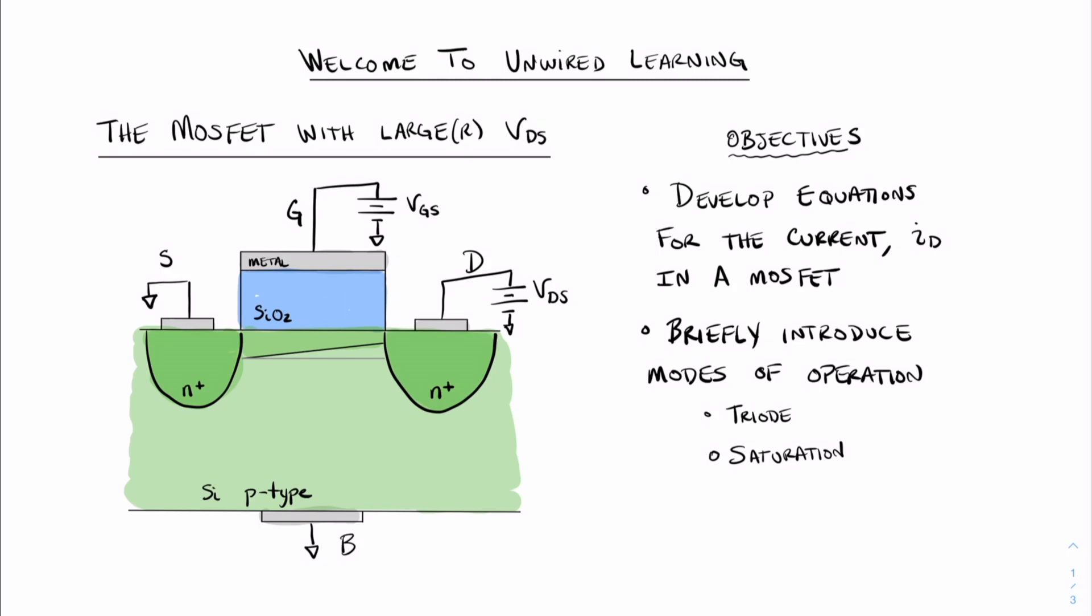Welcome to Unwired Learning. In this video, we're going to talk about the MOSFET with a larger value of drain-to-source voltage. In particular, we're going to talk about the development of equations for the current that goes through from drain to source, and how that differs from the previous video.